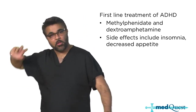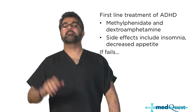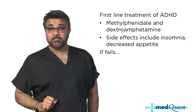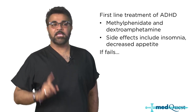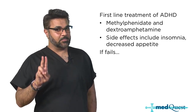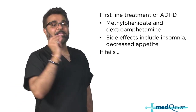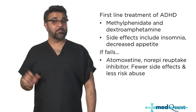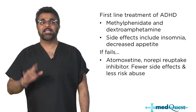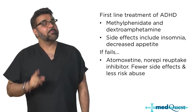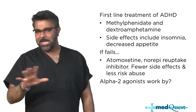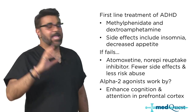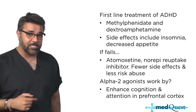The exams are going to throw you a curveball. If they tell you that the first-line treatments have failed, which medication do you use next? The answer is atomoxetine, which is a norepinephrine reuptake inhibitor, which has fewer side effects and less risk of abuse. They may also consider alpha-2 agonists, which work by enhancing cognition and attention in the prefrontal cortex.